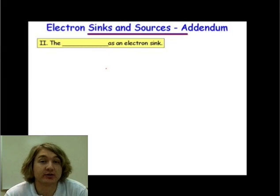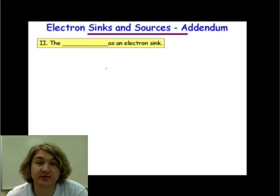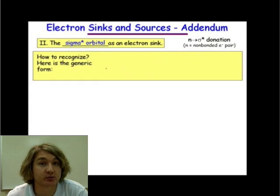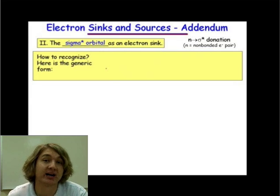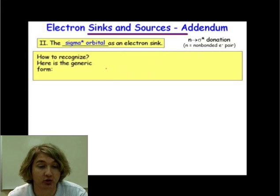In this webcast, we'll be discussing another type of electron sink, specifically the sigma star orbital as our electron sink. The interaction we'll be spending most of this webcast discussing is that of n→σ* donation, or a non-bonding electron pair or lone pair donating through a pi-type interaction into a sigma star orbital.